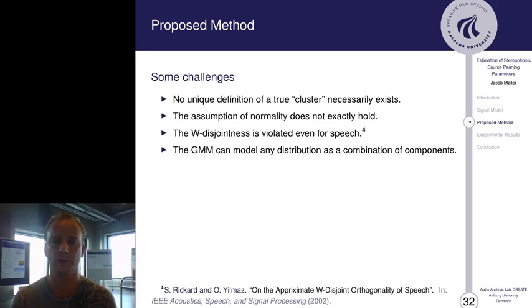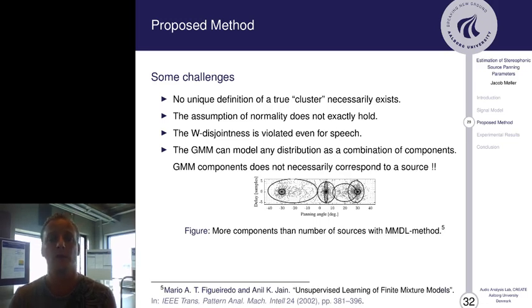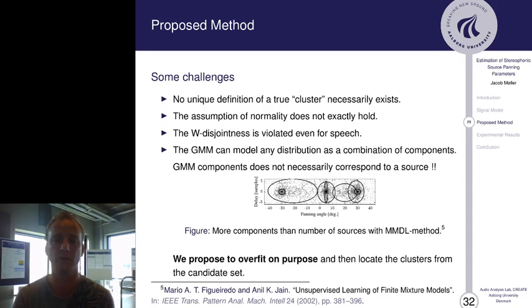Therefore, some of the challenges are summarized here. There does not necessarily exist a unique definition of a true cluster. You might see something, I might see something else, if we look at some distribution space. The assumption of normality does not exactly hold, and also the W disjointness is violated even for speech. The GMM can model any distribution as a combination of components. And if we look at this figure, the black ellipsoid shows this overfitting quality. This is the MMDL method, and we have 10 black ellipsoids describing a mixture of three components. Therefore, we propose to overfit on purpose, and then locate the clusters from the candidate set.